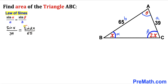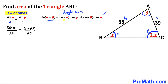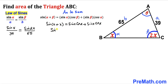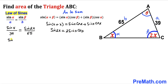Before going further, let's expand sine of 2x using the angle sum identity: sine of (alpha plus beta) equals sine alpha times cosine beta plus sine beta times cosine alpha. Setting both alpha and beta equal to x, we get sine of 2x equals 2 times sine x times cosine x. Substituting back, our equation becomes: sine x divided by 39 equals 2 times sine x times cosine x divided by 65.